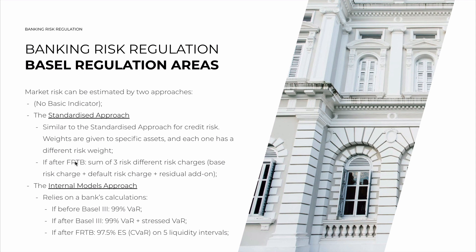It's important to note that banks that have already implemented the Fundamental Review of the Trading Book post-Basel III have to use a more complicated system. It is still a sum of different weights for different asset types, but now there are different and more complex weights. There is a sum of three different risk charges for each asset type: a base risk charge (which includes delta risk, vega risk, and curvature risk), then a default risk charge for credit sensitivity, and then a residual risk add-on.